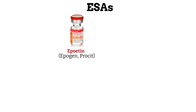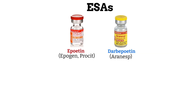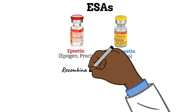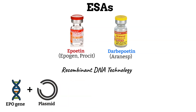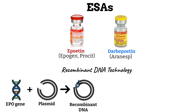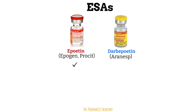The ESAs available on the market are epoetin, which goes by the brand names Epogen and Procrit, and darbepoetin, also known as Aranesp. These agents were developed using recombinant DNA technology, which allows you to take the EPO gene, insert it into a plasmid — a vehicle that can carry DNA — creating recombinant DNA, which is then inserted into a non-virulent bacteria cell to replicate and make more copies. In general, there are no clinically significant differences in the safety and efficacy of epoetin and darbepoetin.